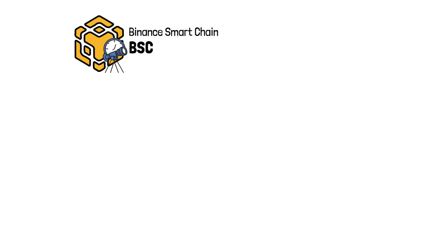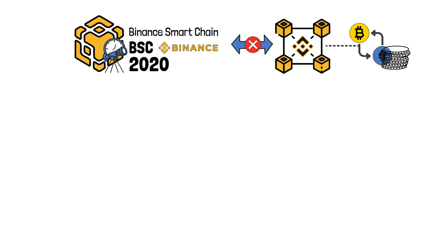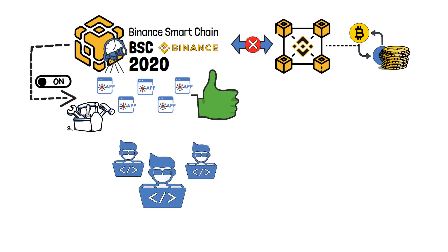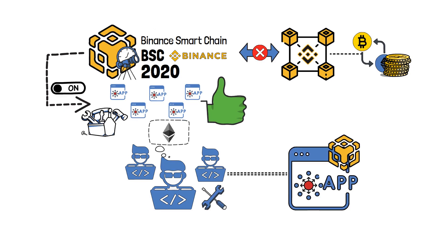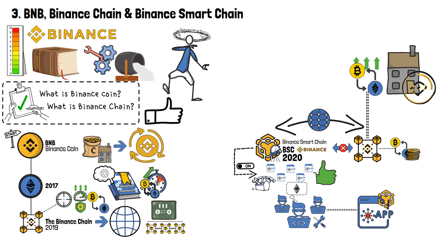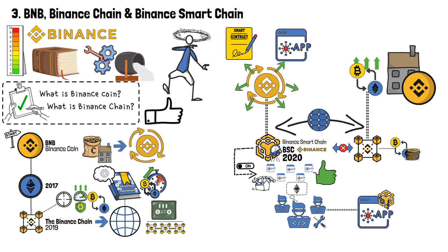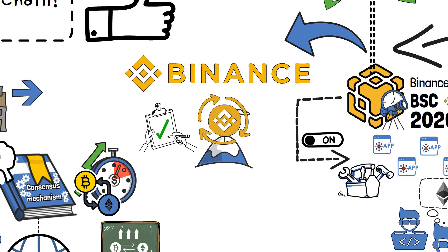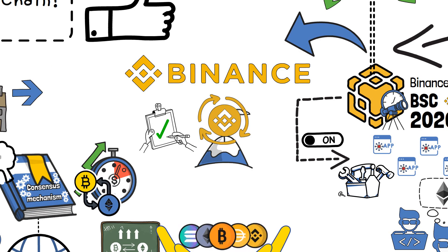The Binance Smart Chain, or BSC, is an innovative blockchain platform introduced by Binance in 2020, and it's not the same as the Binance Chain. While the Binance Chain primarily caters to token transfers, the Binance Smart Chain took a step further by enabling the creation of decentralized applications, making it easy for developers familiar with Ethereum to build and deploy dApps on BSC. These two chains are highly interconnected — the Binance Chain specializes in efficient token transfers, while the Binance Smart Chain expands the ecosystem's capabilities by supporting smart contracts and decentralized applications. Users can seamlessly move assets between these two chains, enjoying the benefits of both.